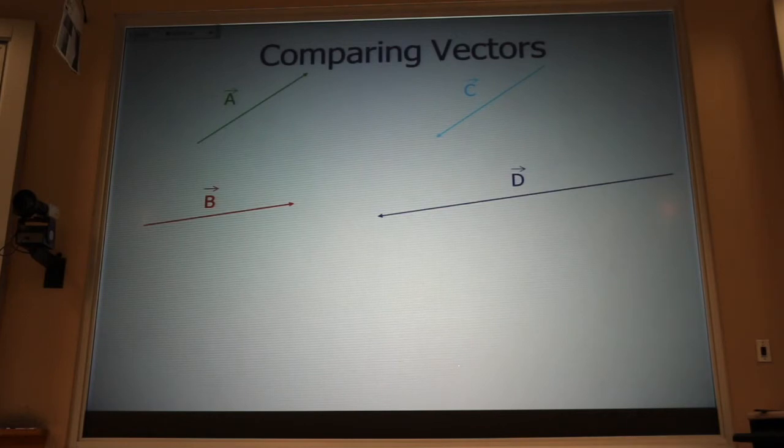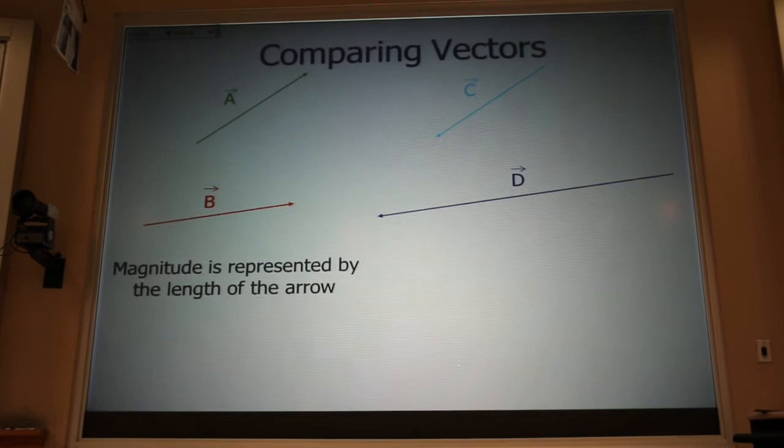Look at those vectors for a moment. What can you tell me about the magnitude of those vectors? Are any of the vectors the same magnitude? Which ones? A, B, and C. And it looks like B is about twice as long as the others.